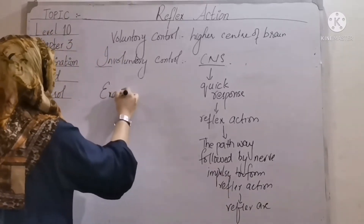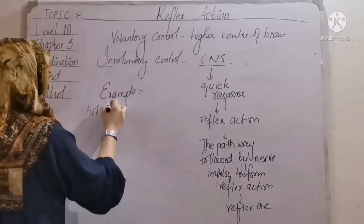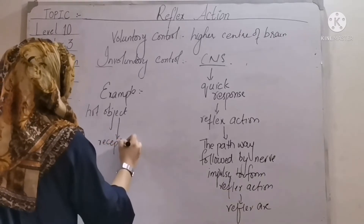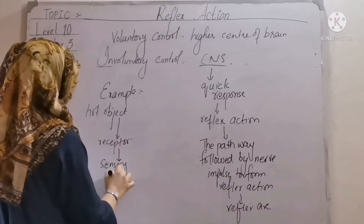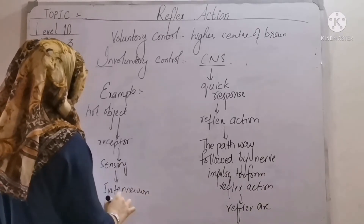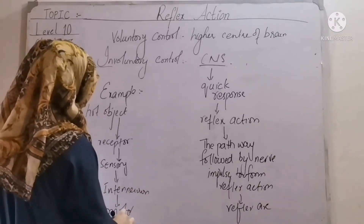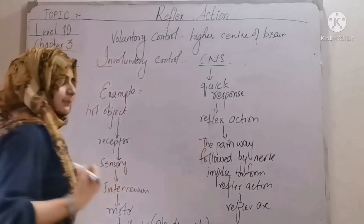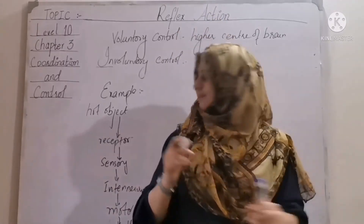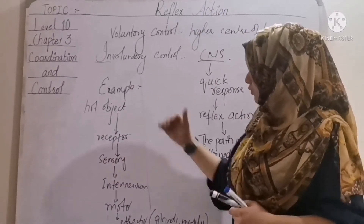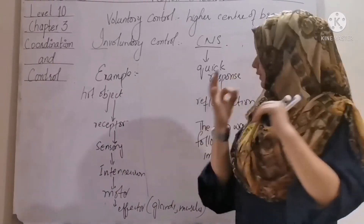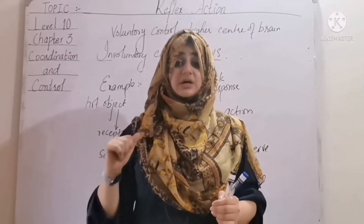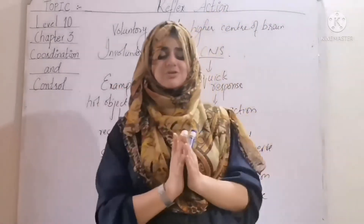Now we are going to learn an example of reflex action. For example, if you touch a hot object, the receptors capture it and send the message forward through sensory neurons, then through interneurons, then to motor neurons, and then to the effector — which shows the response through glands and muscles. So you will remove your hand from the hot object. Receptors → sensory neurons → interneurons → motor neurons → effectors → glands and muscles — that is all called reflex action.